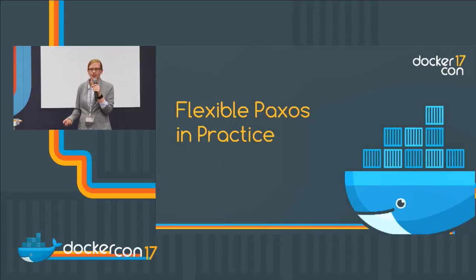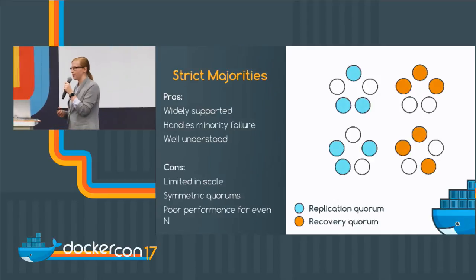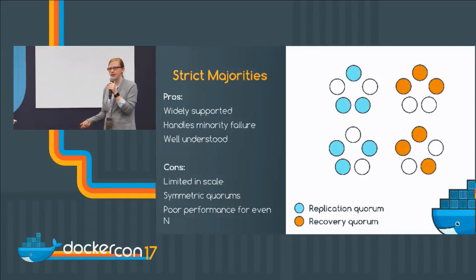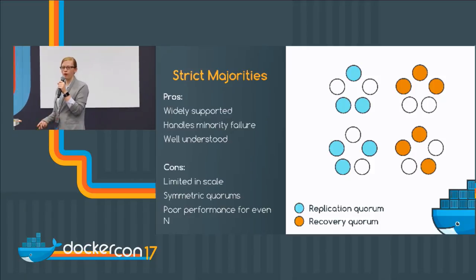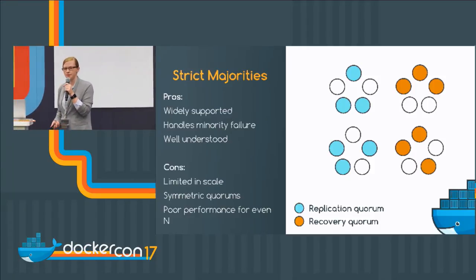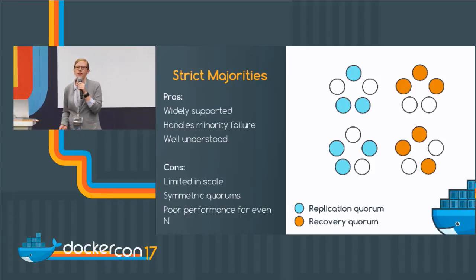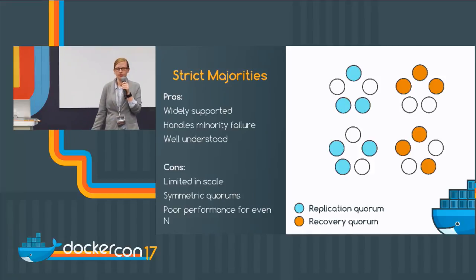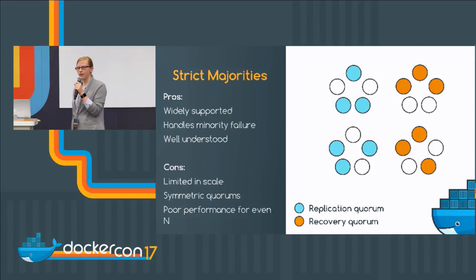So I'm going to talk about how we can actually use this result in practice. The systems we have at the moment use majorities, so we tend to deploy them across three or five nodes. In a system of five nodes, we need three nodes to agree to reach consensus. This is easy to reason about — if a minority fail, we can carry on; if a majority fail, we can't. But this is quite limited — we can't scale this system up.